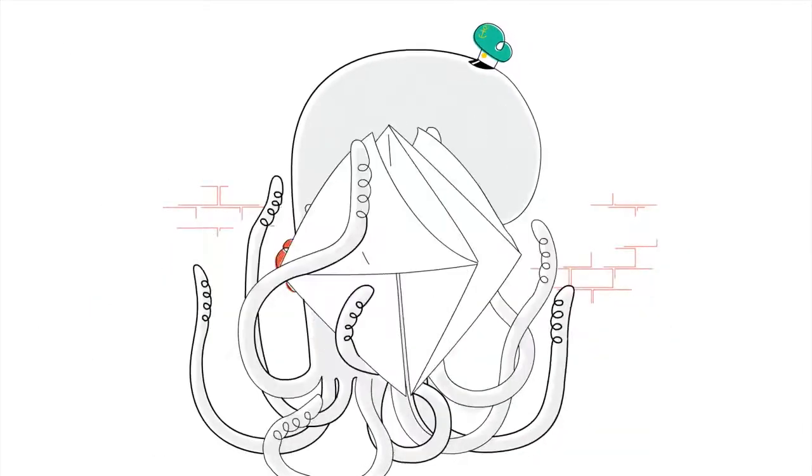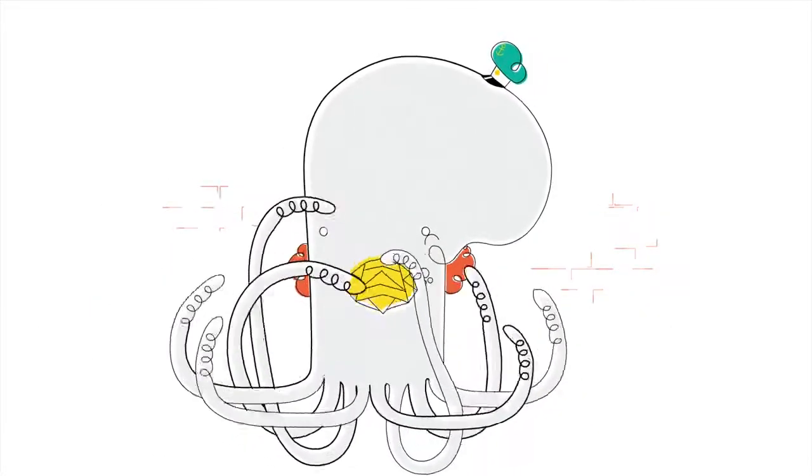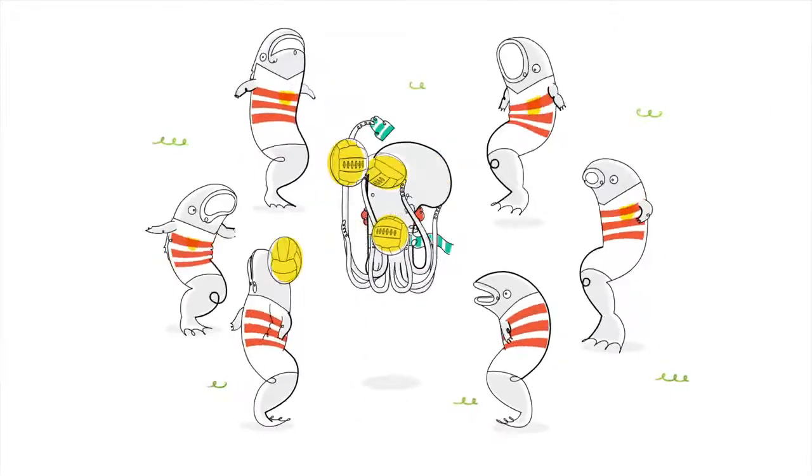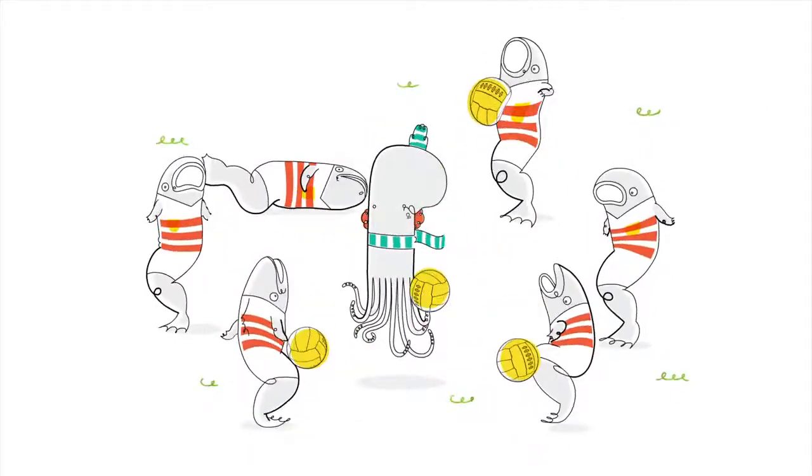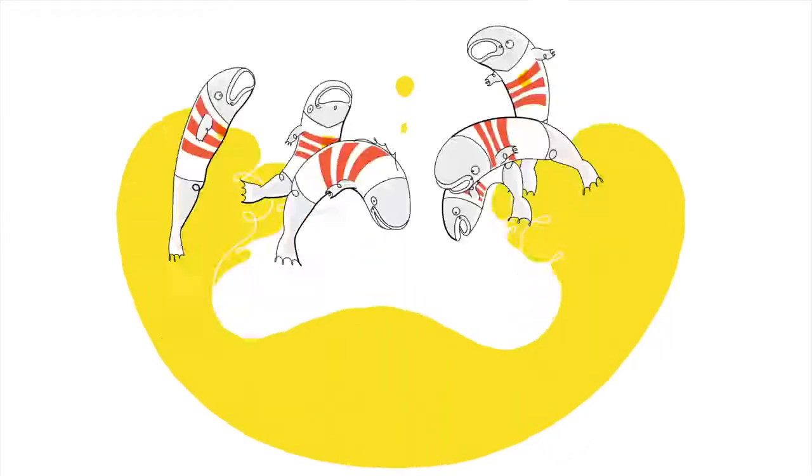You could be making origami from a slice of beef pastrami. Or having a kickabout with a team of giant trout. While Hive is busy controlling your heating at home.